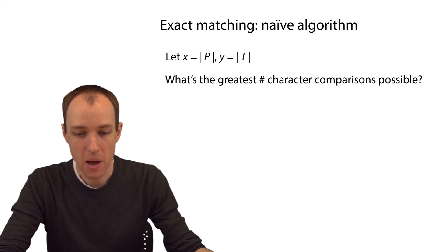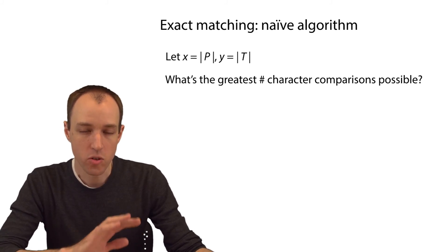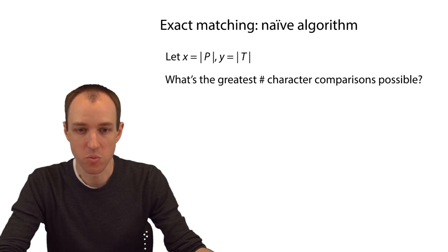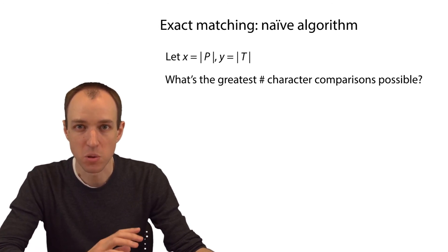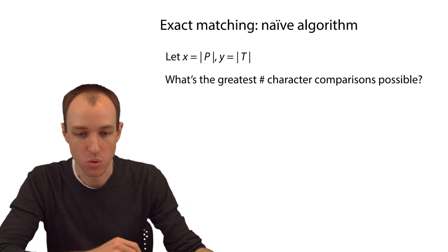Here's a related question. Given a pattern of length x and a text of length y, what is the greatest total number of character comparisons we could possibly do? What's the greatest number of times that we can possibly iterate through the inner loop of our nested pair of loops?